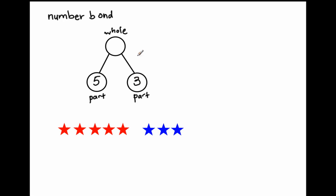How many stars do I have all together? Well, I have five and then six, seven, eight. So five and three put together makes eight. And that's the thinking behind this.